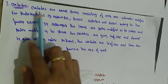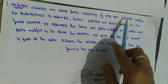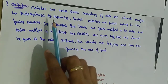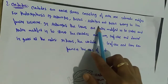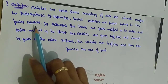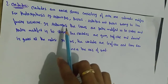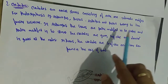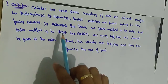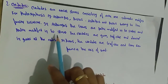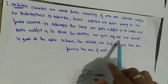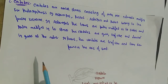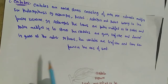The second type is cladodes. Cladodes are aerial stems consisting of only one internode, modified for photosynthesis. Examples are Asparagus and Ruscus, both belonging to the family Liliaceae. In Asparagus, the leaves are partially modified into scales and partially into spines. The cladodes are green and leaf-like, and develop in groups at the nodes.